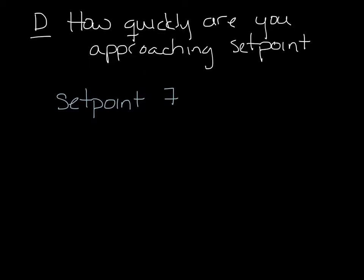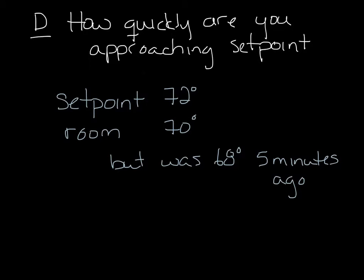So again, if your setpoint is 72 degrees, and your space is 70 degrees, but it was 68 degrees a couple minutes ago, the controller knows you're approaching setpoint quickly, and changes the heater output so that it doesn't overshoot the setpoint.